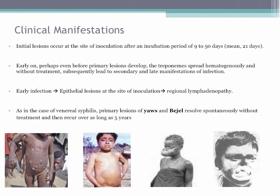These diseases share certain clinical manifestations. First, there's an initial lesion at the site of inoculation — whether an insect bite, a cut, or a break in the skin that facilitates invasion of treponemes. The incubation period for all three is 9 to 90 days, with a mean of 21 days. Early on, sometimes even before primary lesions appear, treponemes spread hematogenously, which is why we see secondary and sometimes late manifestations. The early phase features epithelial lesions — erythematous plaques, macules, papules, or wart-like lesions — along with regional lymphadenopathy in most cases.